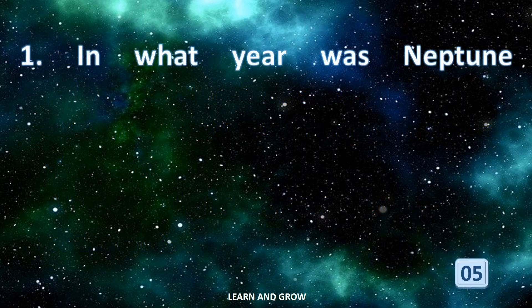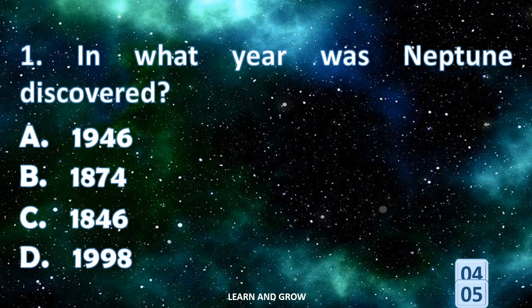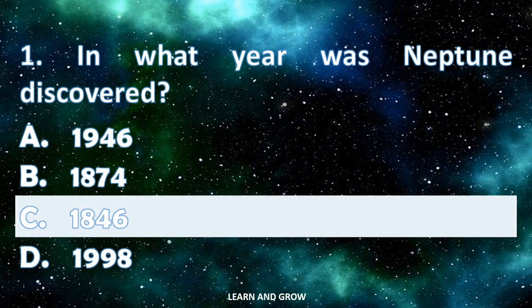In what year was Neptune discovered? Neptune was discovered in the year 1846.